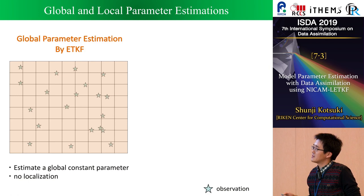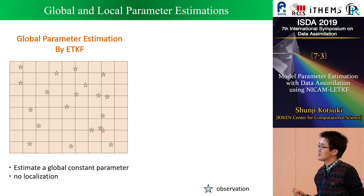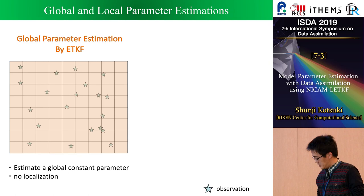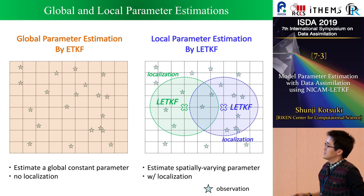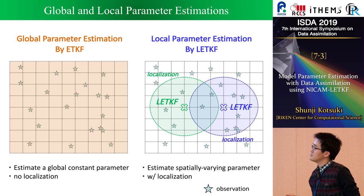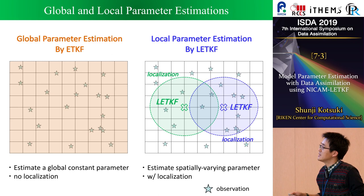In the case of global parameter estimation, we use the ensemble transform Kalman filter to estimate a globally constant parameter. In this case, there are many observations over the globe, and we assimilate those observations without localization. But in the case of the ensemble Kalman filter with localization, we can consider spatial variation. By assimilating local observations using the local ensemble transform Kalman filter (LETKF), we can estimate a spatially varying parameter. We are going to see what happens when we estimate this parameter as a spatially varying parameter.